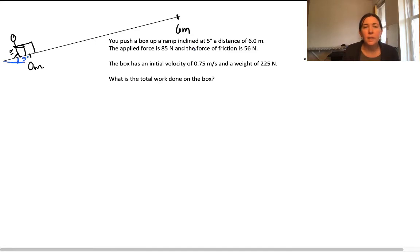The box has some initial velocity and a weight of 225 newtons. I will push it up the ramp a distance of 6 meters, so it's going to travel up the ramp. I apply some force and there is also friction.